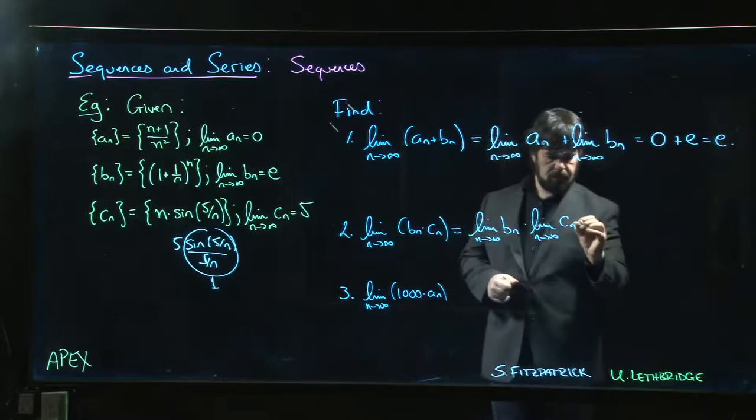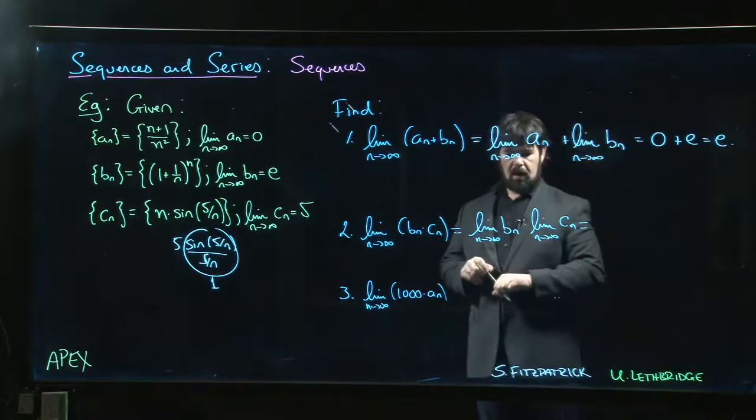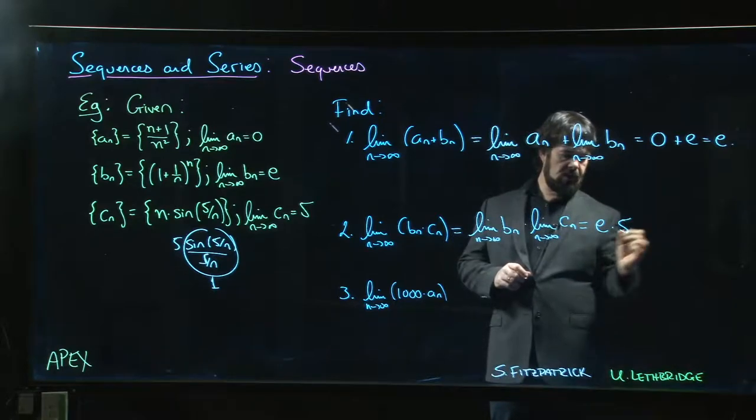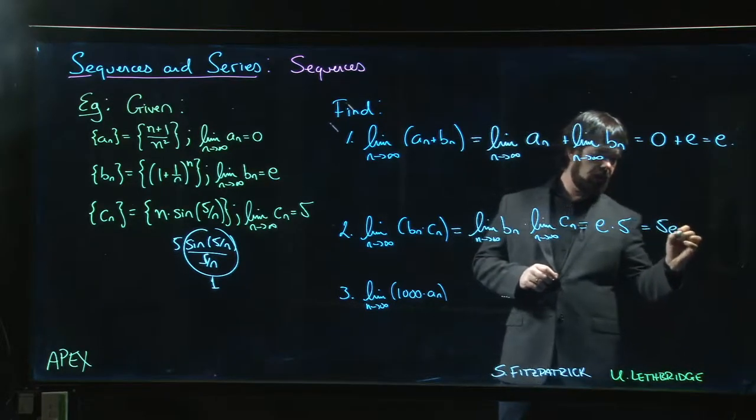Okay, and limit of b_n is e, limit of c_n is five, so e times five, or maybe we would prefer to write that as five e.